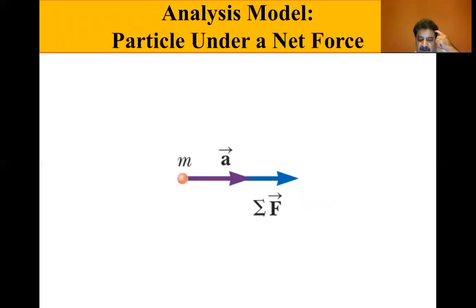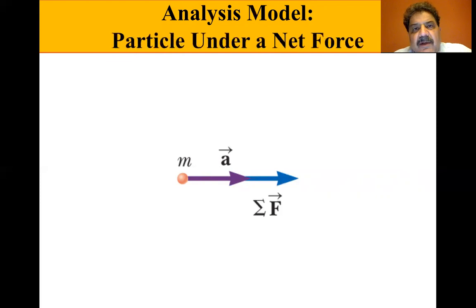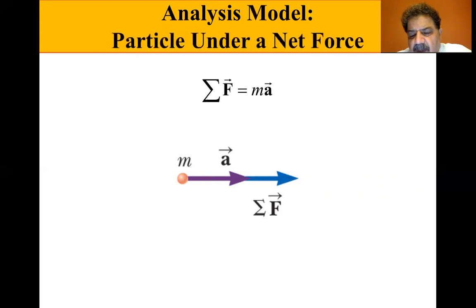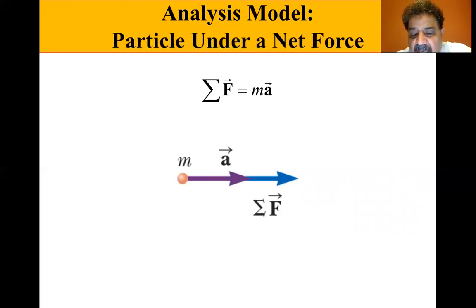In the particle under a net force model, if an object has one or more forces acting on it so that there is a net force, it will accelerate in the direction of the net force. The relationship is the sum of forces equals mass times acceleration — Newton's second law. Examples include: a crate pushed across a factory floor, a falling object acted upon by gravity before reaching terminal velocity, a piston in an automobile engine pushed by hot gases, and a charged particle in an electric field.